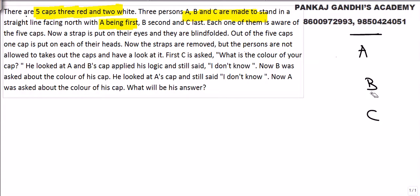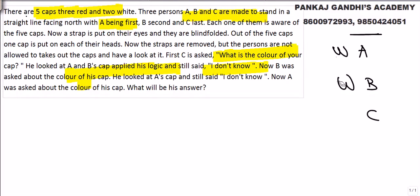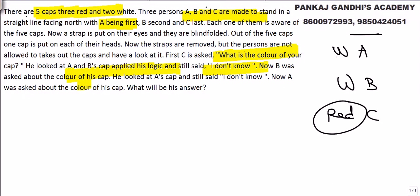Now, C knows there are only two white caps. If C sees both A and B's caps are white, C will say his own cap is red — because there are only two white caps and both are accounted for. So if both A and B have white caps, C will confidently say his cap is red.